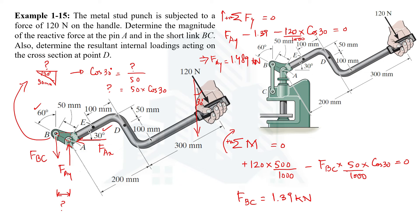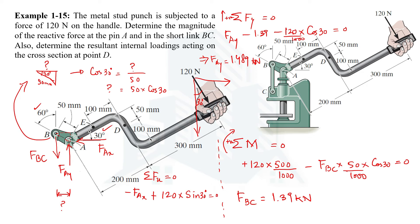We also need the horizontal component of the reactive force at pin A. Using the first condition of equilibrium — summation of all forces in the X direction equal to zero, taking rightward as positive — FAX is leftward (negative), and the horizontal component of the 120 N force is 120 × sin 30°, rightward (positive). There is no other horizontal force, so FAX equals 0.06 kilonewtons, or 60 N.